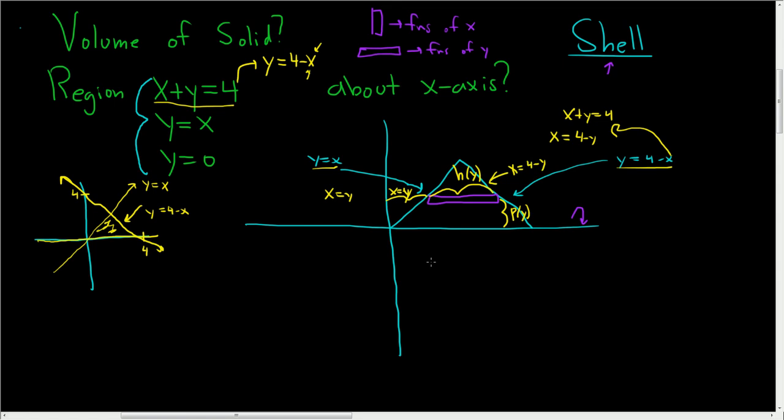Now we're ready to think about h of y. So h of y is equal to, let me switch colors. So h of y is equal to, well, it's this distance here. So to find this distance here, we're going to take, see if I can draw it correctly, we're going to take this distance here. So this distance here that I just drew, that's x equals 4 minus y. So we're going to take 4 minus y. And we're going to subtract this distance here. So x equals y.